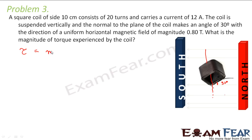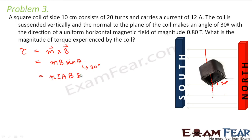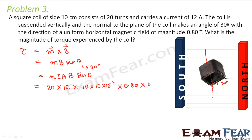Torque is given by the cross product of M and B, which equals MB sin θ. Here θ = 30° and M = N × I × A. N is 20, I is 12 amperes, and A is side squared = 10 × 10 × 10⁻⁴ m². The magnetic field B = 0.80 tesla and sin 30° = 1/2. Calculating: 20 × 12 × (10 × 10 × 10⁻⁴) × 0.80 × 0.5 = 0.96 N·m. So 0.96 Newton meter is the value of the torque.